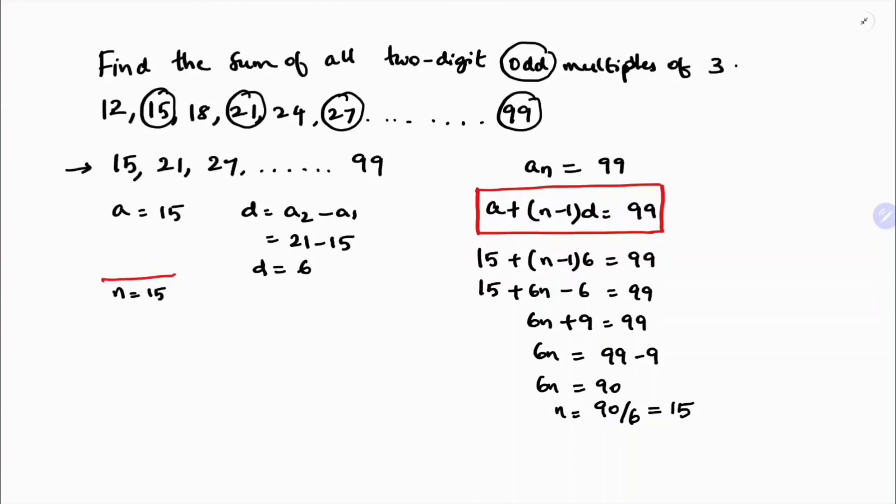The value of n is 15. Now we need to find S₁₅, the sum of all two-digit odd multiples of 3. I can use two formulas: one is n/2 times (a + l) as I know the last term.